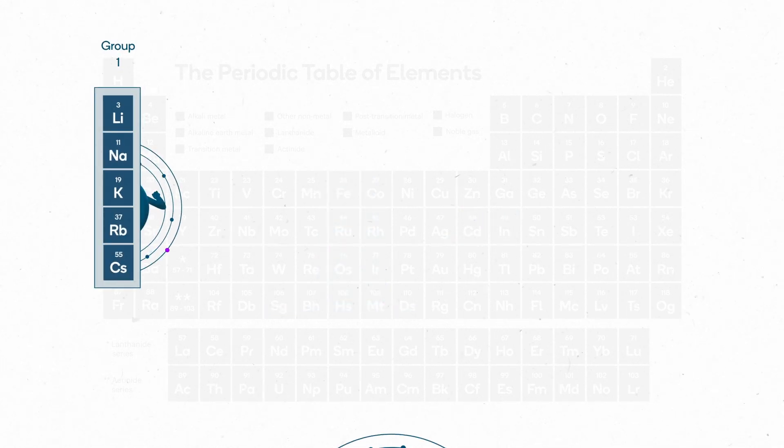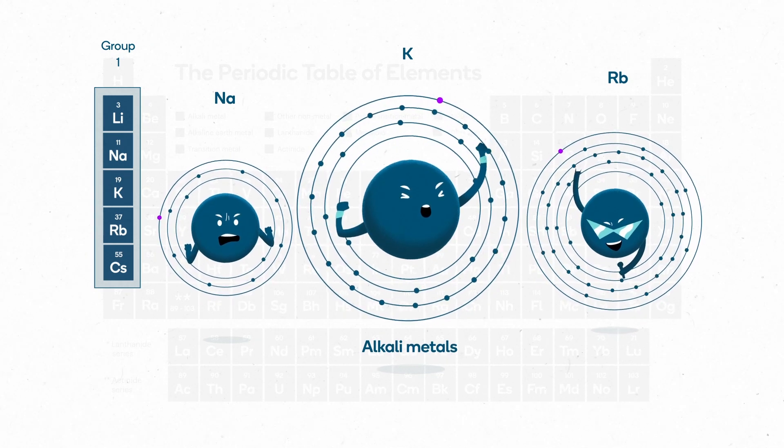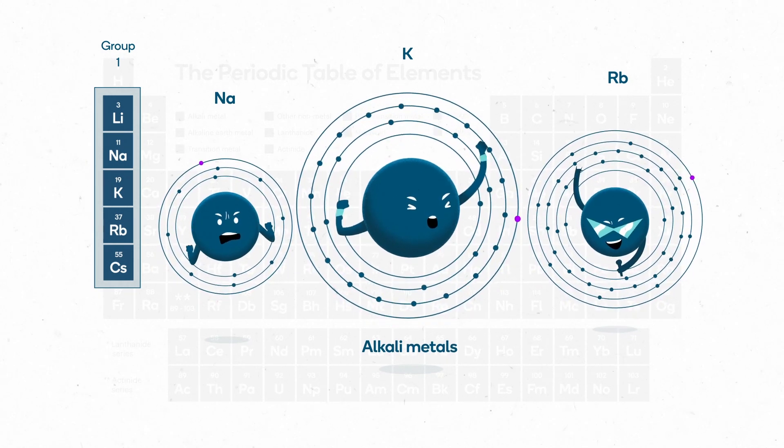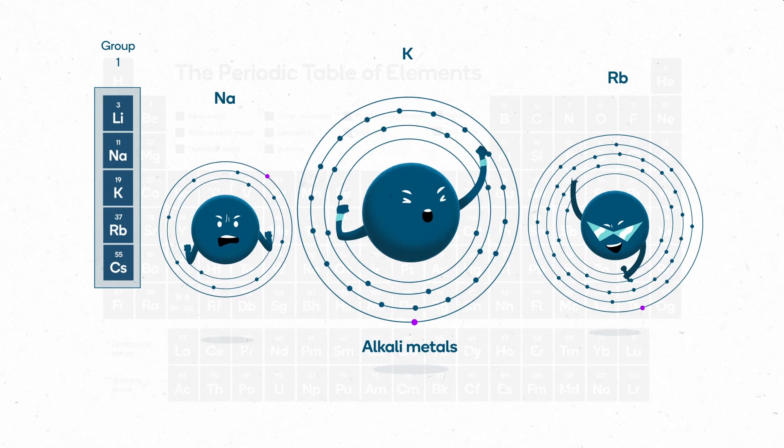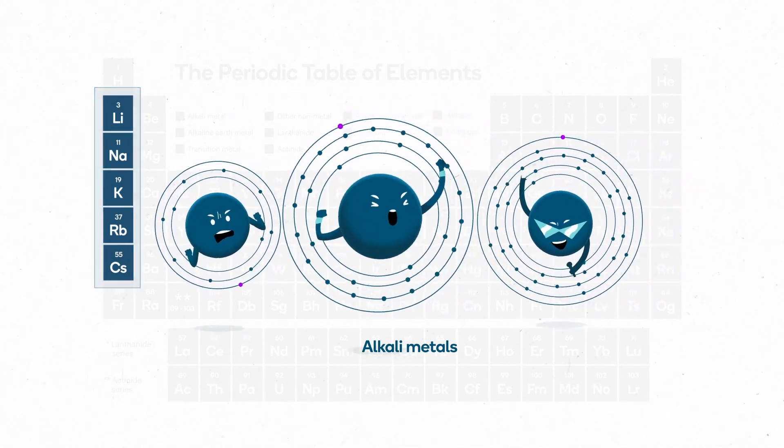Sodium and the other elements in group 1 of the periodic table are known as the alkali metals. They all have one valence electron that can be transferred in a reaction. This makes them all highly reactive with substances like water, oxygen and acids.